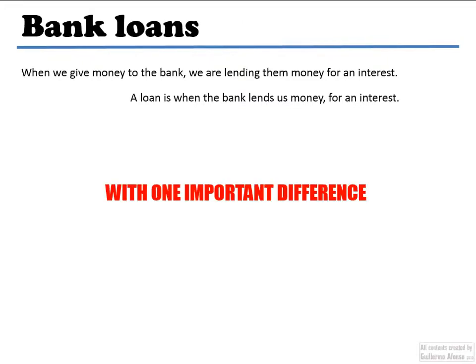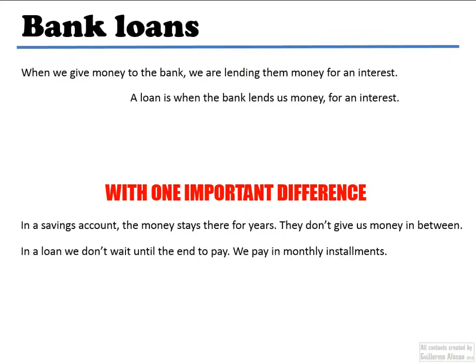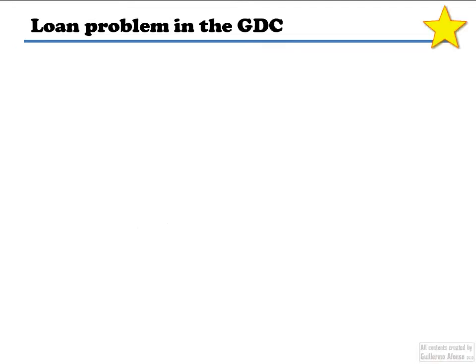Instead of us giving money to the bank, the bank is giving money to us. The difference is that we are giving money in between to the bank. We're paying monthly installments to the bank. So this is the PMT key that we had in the calculator. It's the payment per period, how much money we're putting in per period.